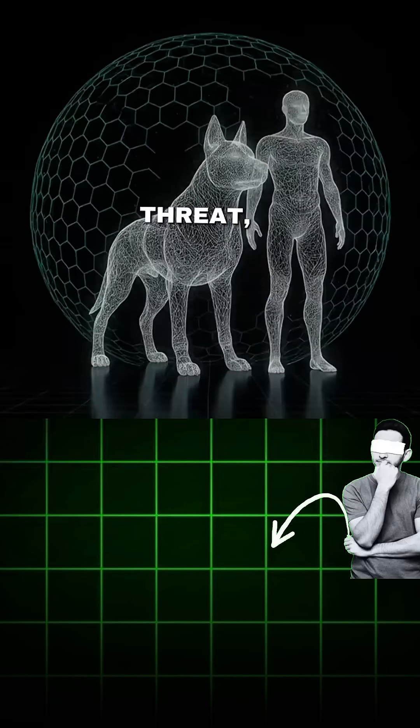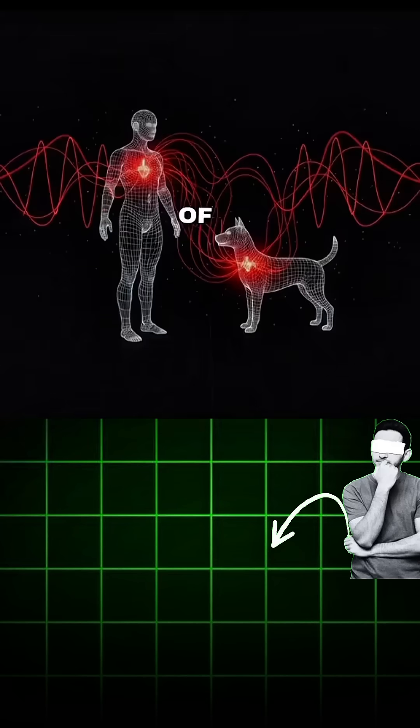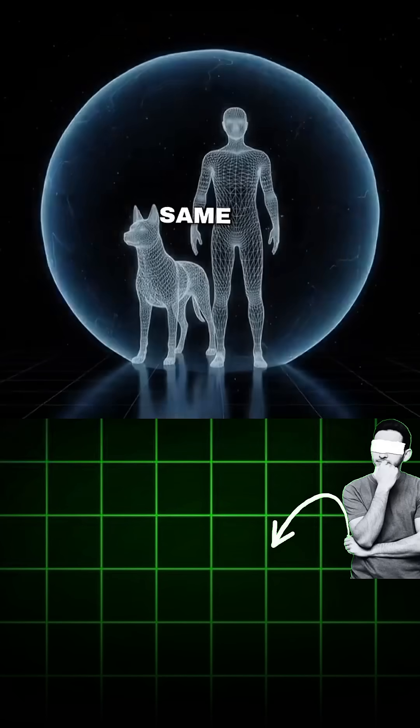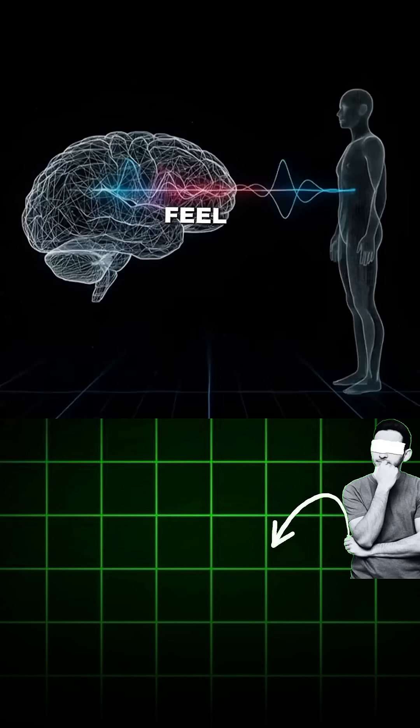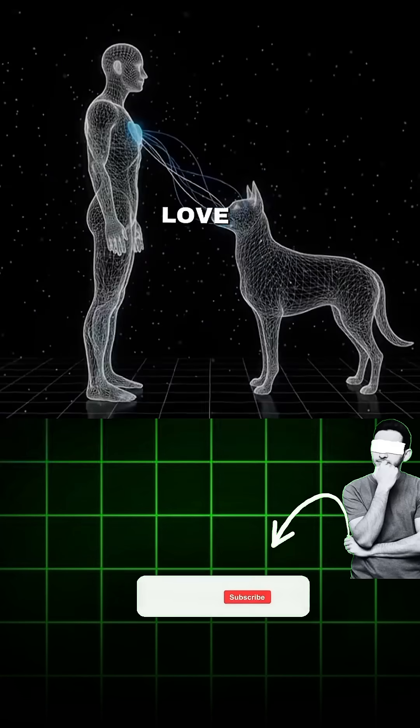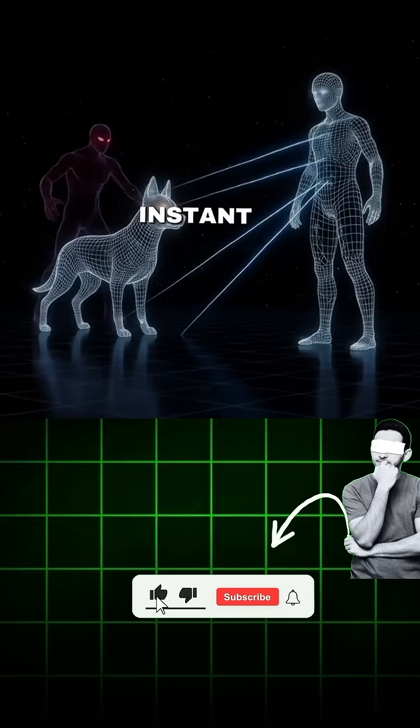When your dog senses a threat, its brain releases a surge of adrenaline and oxytocin, the same bonding hormone humans feel with family. That mix of love and alertness turns into instant bravery.